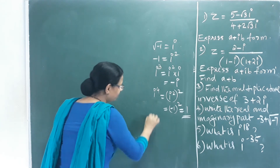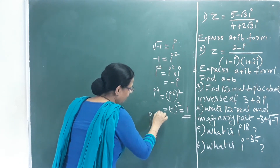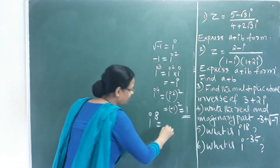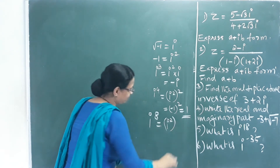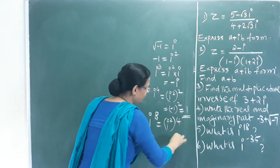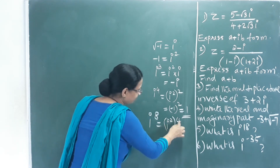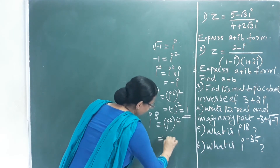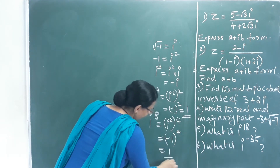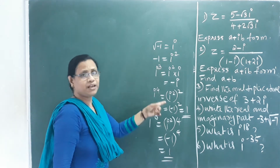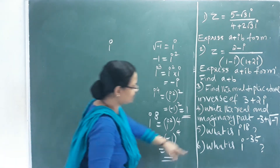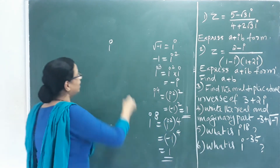To find higher powers of i, we use the fact that i² = -1. For example, i^18 = (i²)^9 = (-1)^9. Since the power is odd, (-1)^9 = -1. So i^18 = -1.